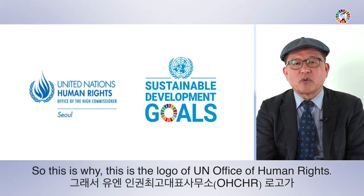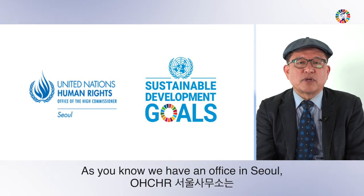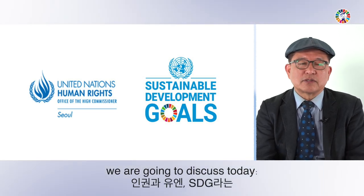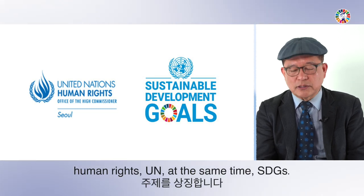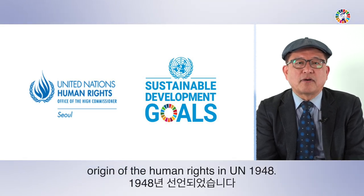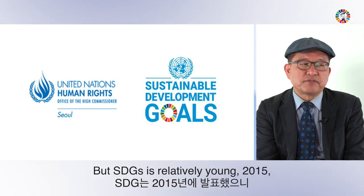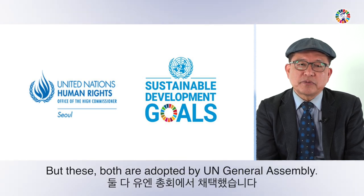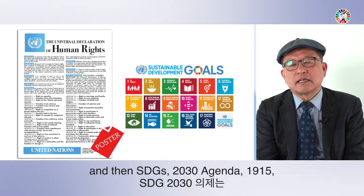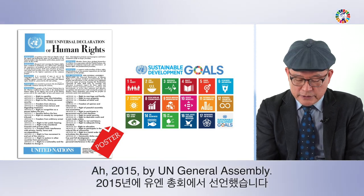This is the logo of the UN High Commissioner for Human Rights. We have an office in Seoul monitoring the human rights situation in North Korea. These are the two symbols of the topic we are discussing today. The Universal Declaration of Human Rights began in 1948, while SDGs are relatively young — 2015, about seven or eight years ago. Both were adopted by the UN General Assembly.